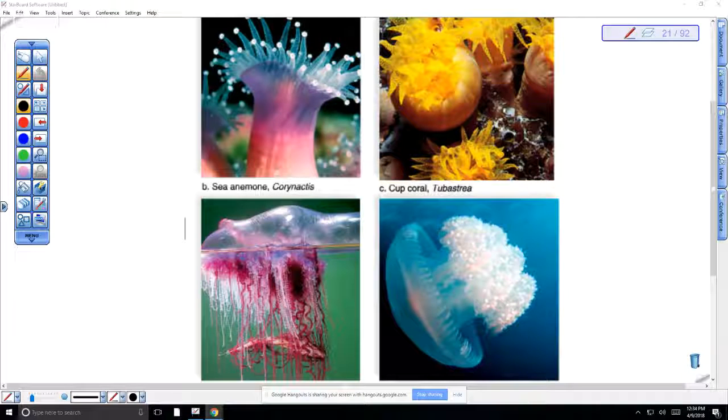Why are they called Cnidarians? They're not technically filter feeders because they actually use their tentacles. They're carnivorous, reaching their tentacles out to grab food. They have stinging cells, so they actually sting their prey, paralyze their prey, and then bring it into their digestive system. They have a digestive system which allows them to eat large food.